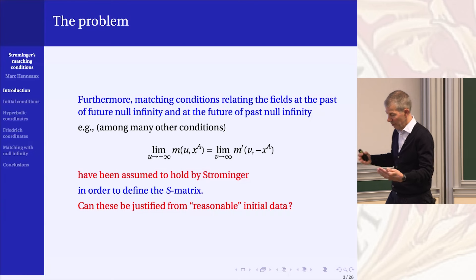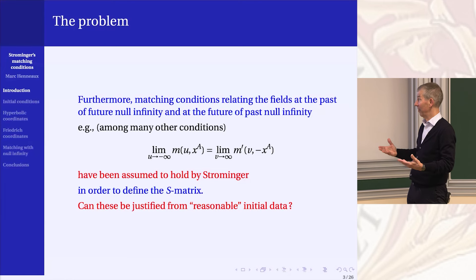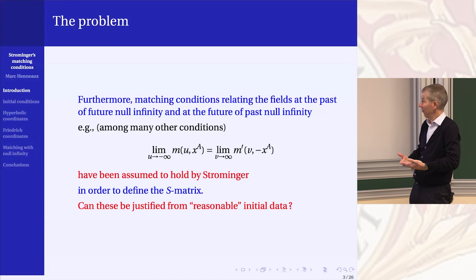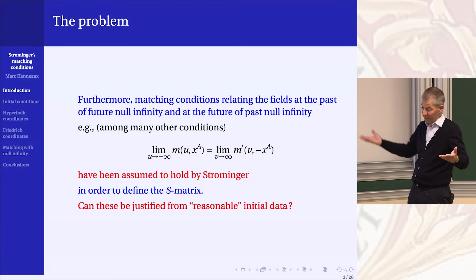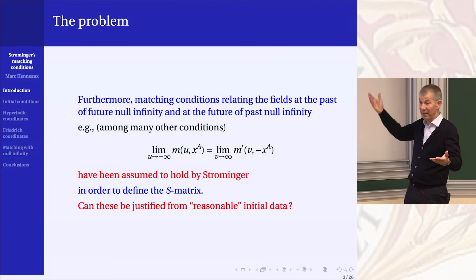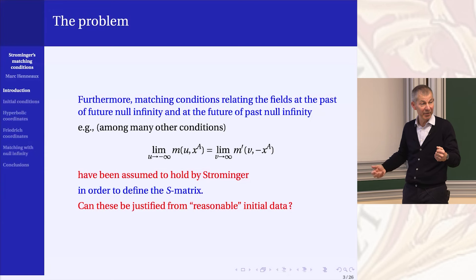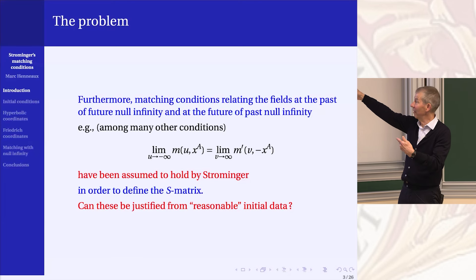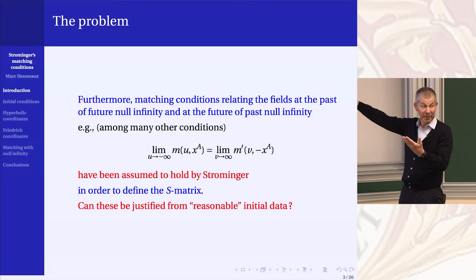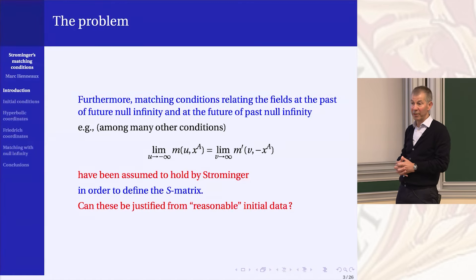The question I would like to ask is: can we justify these conditions? What does justify mean? We should give reasonable initial data, evolve them, get something at null infinity — and if I could integrate explicitly — get something at past null infinity. Do the metrics obtained at past null infinity and future null infinity obey these matching conditions? I would like to view this as a dynamical question: given the initial data, will the Strominger matching conditions be fulfilled?